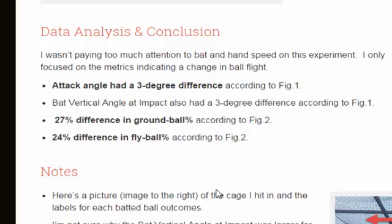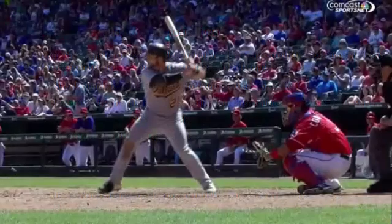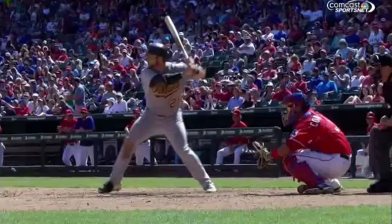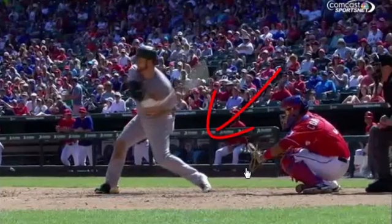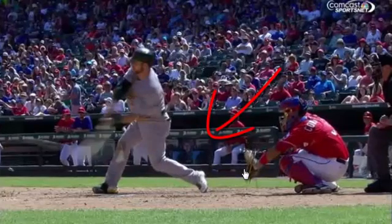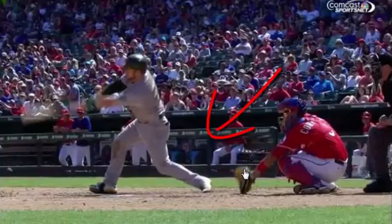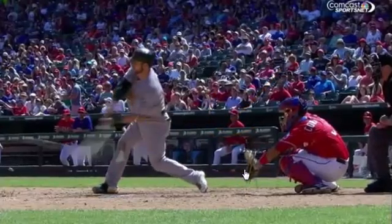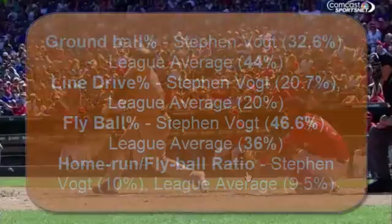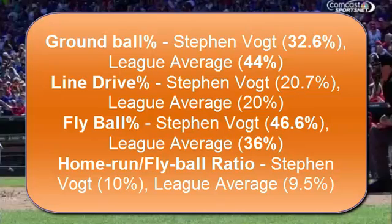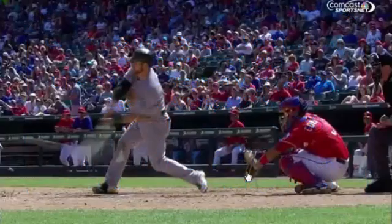Now let's go into watching Steven Voigt's swing. Here's video of Steven Voigt hitting a 78 mile-an-hour curveball, out in front, May 2015. Most hitters when they're out in front on a pitch, you'll see that back leg get straight. Voigt does a very good job of keeping a back leg angle even while out in front. Looking at his metrics on Fangraphs, his ground ball percentage is well below average at 32.6% versus the league average of 44%. His fly ball ratio is above average at 46.6% versus the league average of 36%, and his home run to fly ball ratio is slightly above average at 10% versus the league average of 9.5%, based on four total seasons.